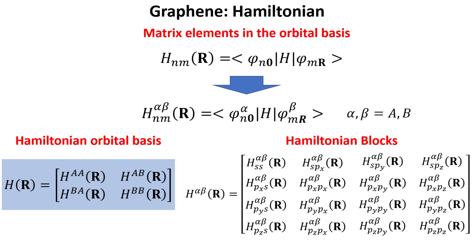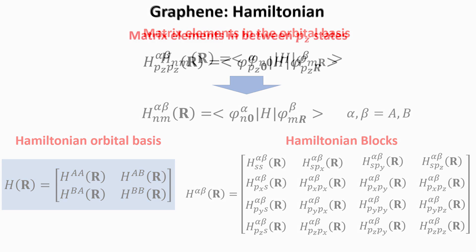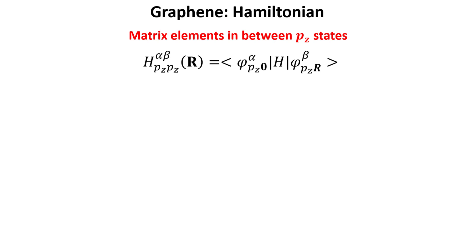Here we are going to focus on the calculation of the Hamiltonian elements involving pz orbitals only, for reasons that will become clear later on. The calculation of all other elements proceeds in the same way, and we leave that as an exercise. The Hamiltonian elements between pz orbitals are explicitly written here for reference. Note that we have a set of four elements corresponding to distinct sublattice combinations for each lattice vector R. Let's begin by analyzing the matrix elements in the home unit cell.